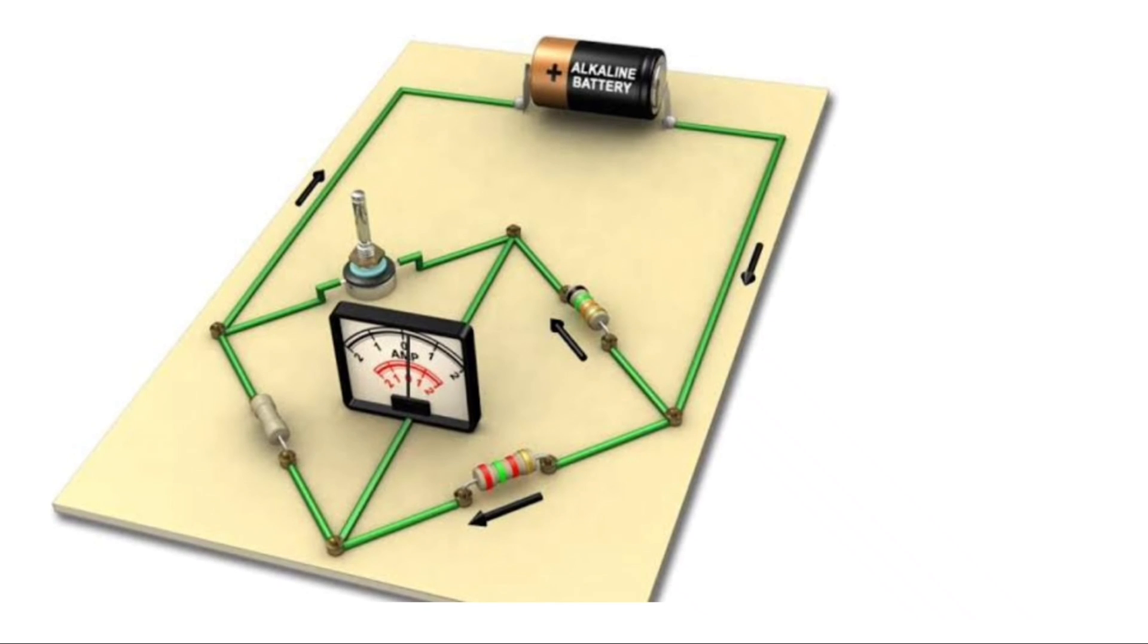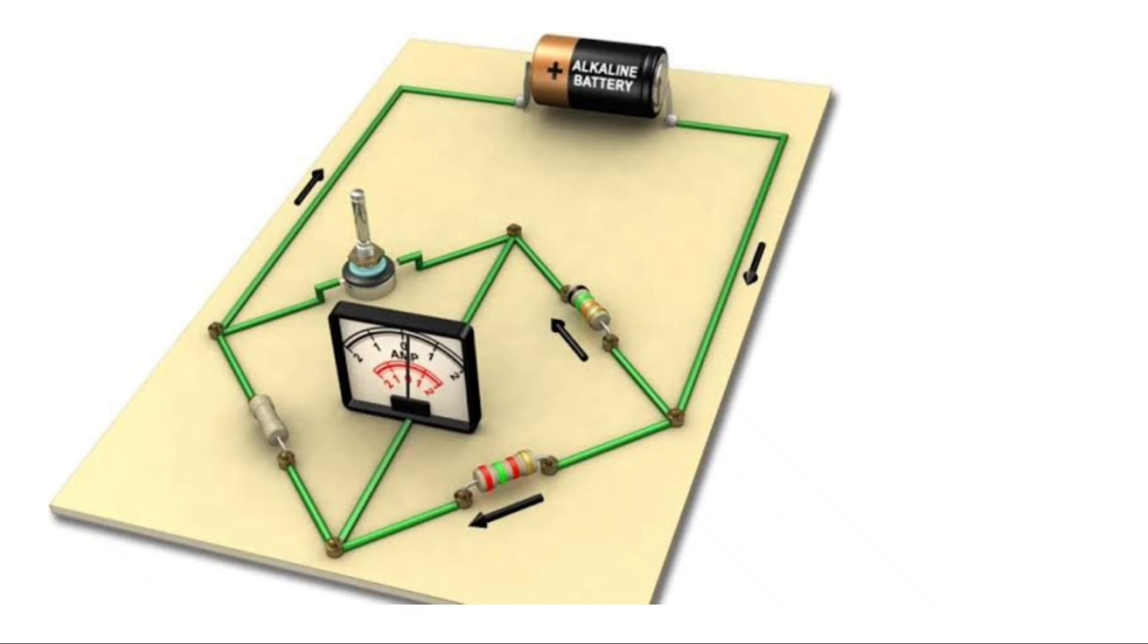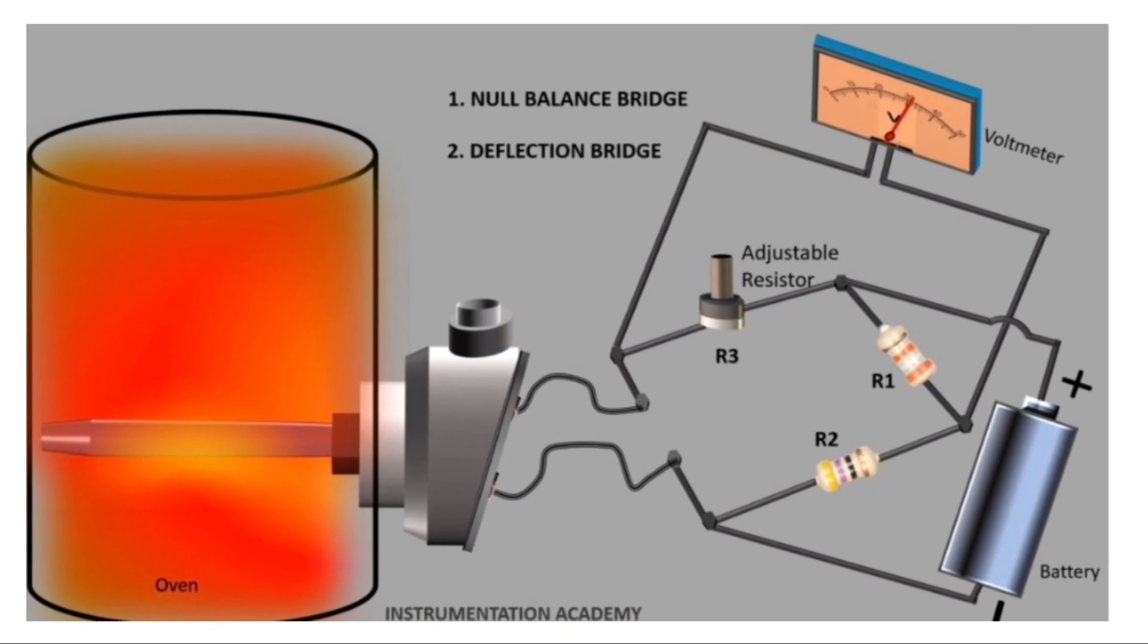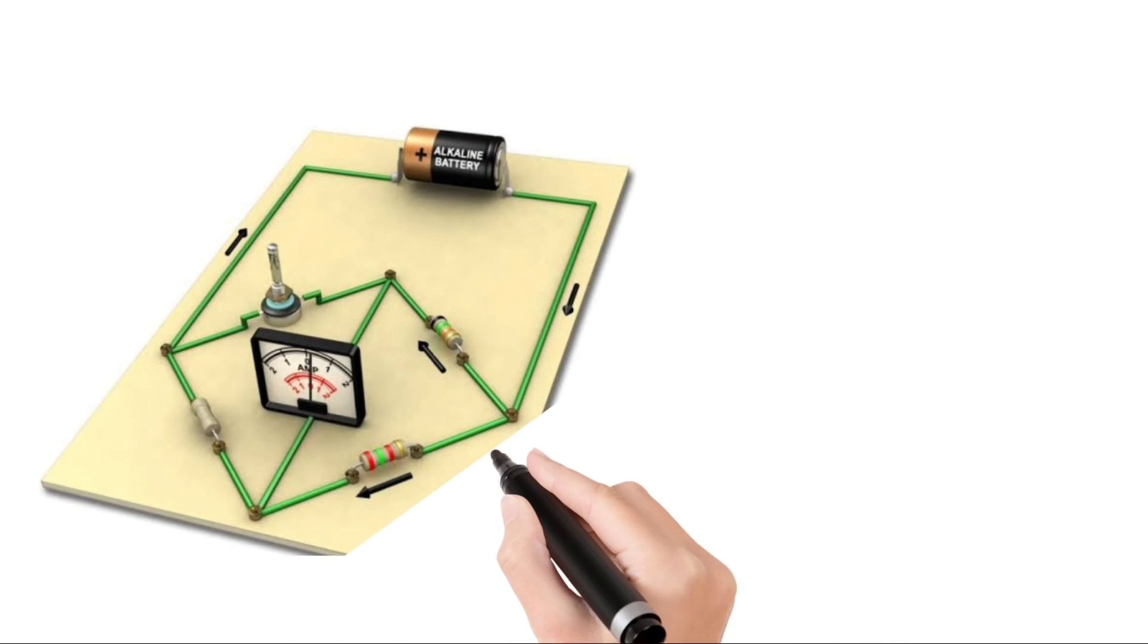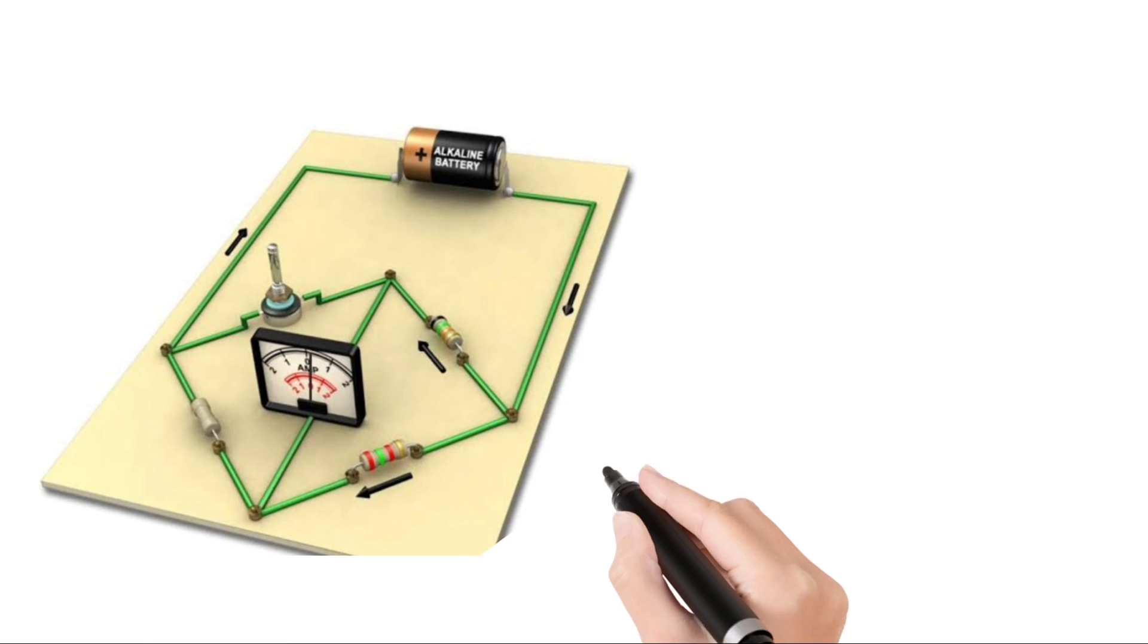In deflection bridge, all three resistors are fixed and not adjusted, and output voltage varies corresponding to the temperature of RTD. If a voltage transducer replaces the voltmeter, a 4 to 20 milliamp signal which is proportional to the temperature range can be generated.